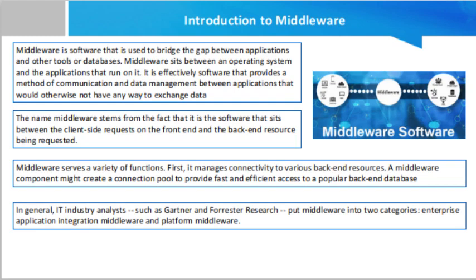Why use middleware? Middleware servers have a variety of functions. First, it manages connectivity to various back-end resources. A middleware component might create a connection pool to provide fast and efficient access to a popular back-end database. It can also create connections to message queues and topics. Furthermore, a piece of middleware software may manage connections to cloud-based resources like the Amazon Simple Storage Service (Amazon S3).